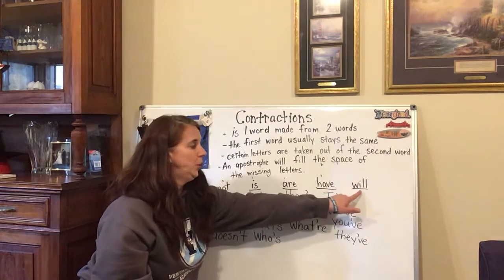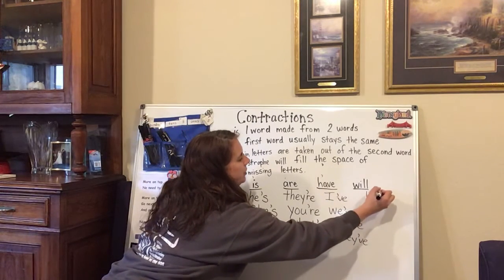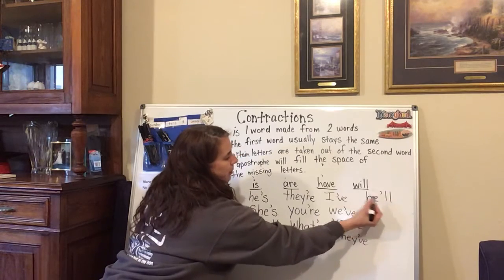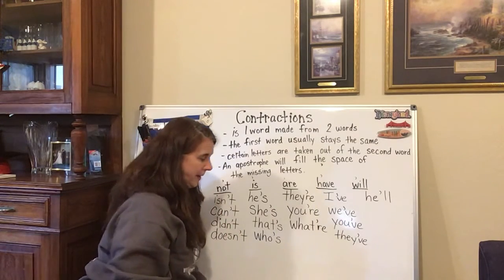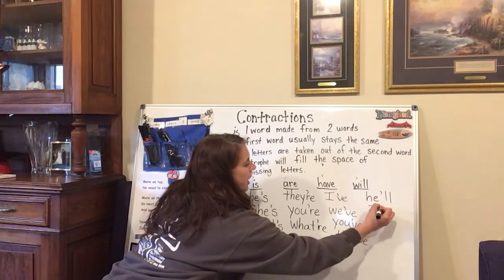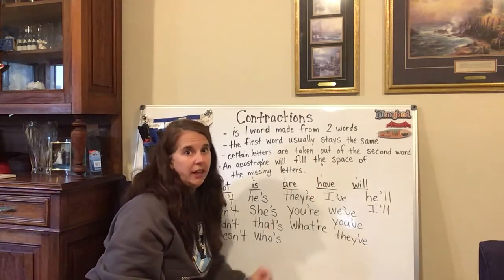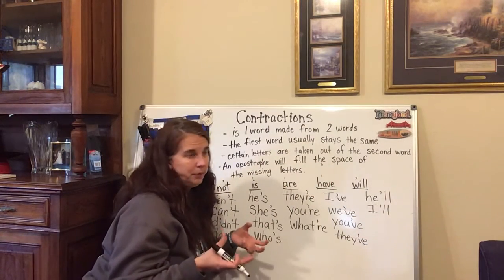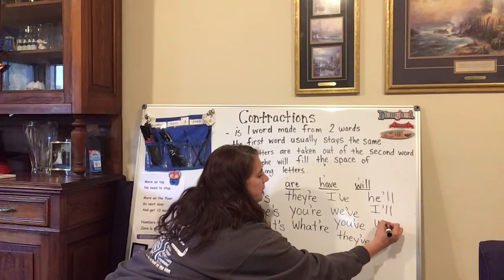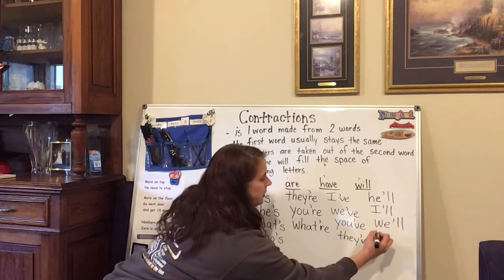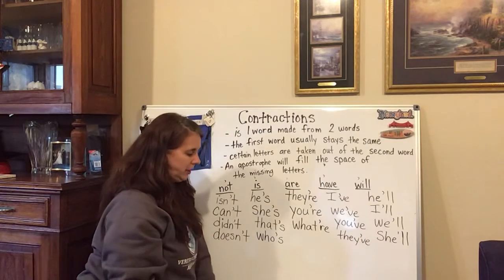Let's move on to 'will.' Let's do 'he will' — it's 'he'll.' Notice the apostrophe is going to take the place of the W and I in 'will.' He'll. 'I will' becomes 'I'll' — you see that contraction a lot. The apostrophe is taking the place of the W and I. He'll, I'll, 'we will' becomes 'we'll,' 'she will' becomes 'she'll.' Again, the apostrophe is taking the place of the W and I.